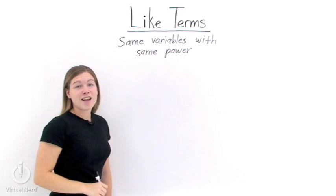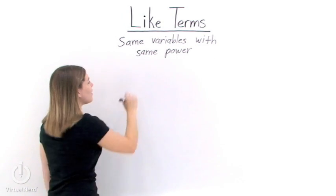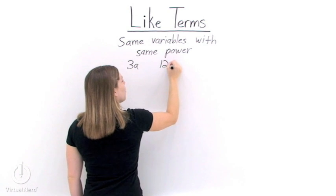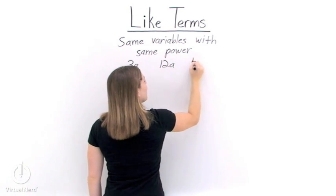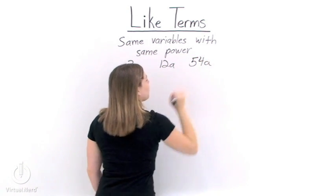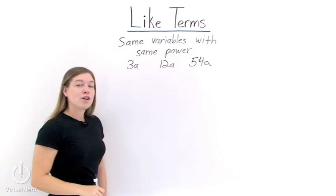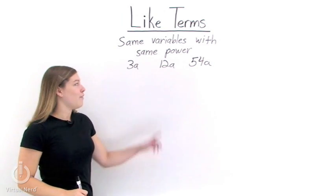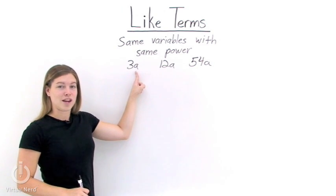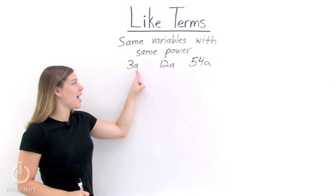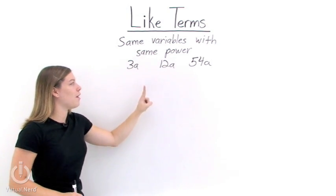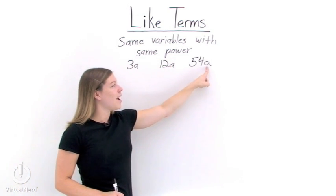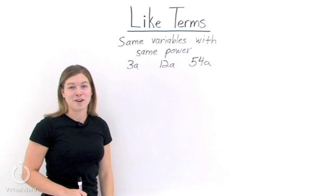Let's take a couple examples of like terms. We have 3a, 12a, and 54a. All three of these terms are like terms. They all have a raised to the first degree — the variable a to the first power.